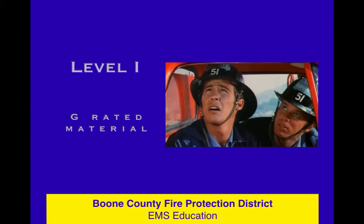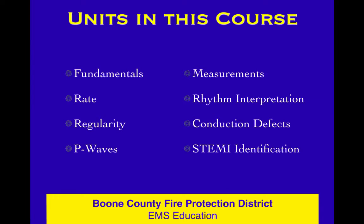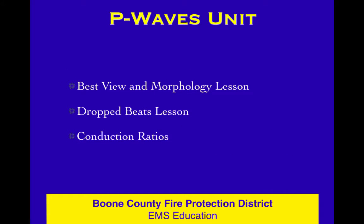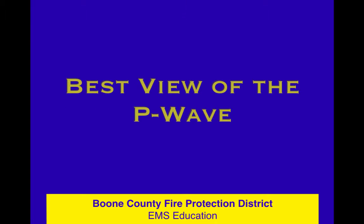We're in the ECG course level one still. We've moved through the fundamentals unit, the rate unit, the regularity unit, and now we're going to focus on P waves. In this unit there are only three lessons — they go pretty quick. We're going to talk about how to get the best view of the P wave and what P wave morphology or shape means, dropped beats, and conduction ratios.